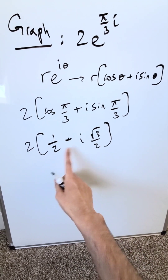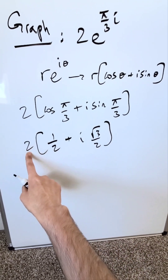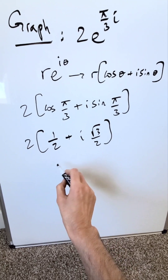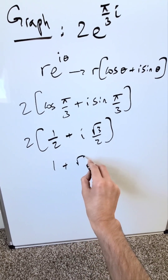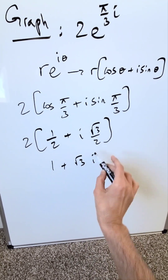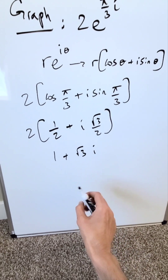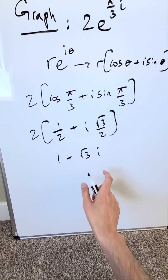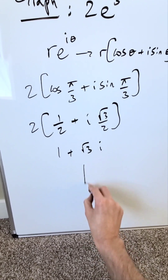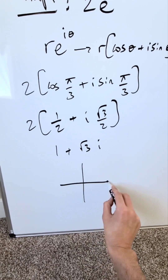When you open up these parentheses, the 2s will cancel out. You'll have here 1 plus √3·i. Here's my complex number in the form a plus bi.